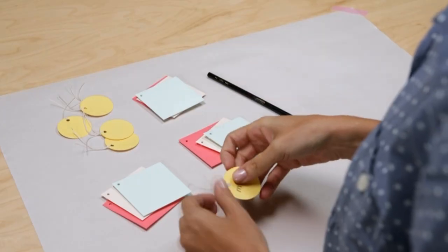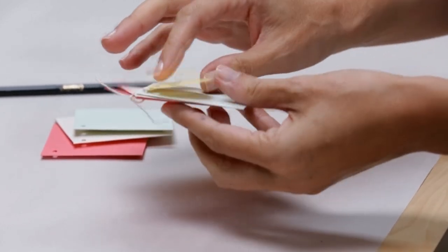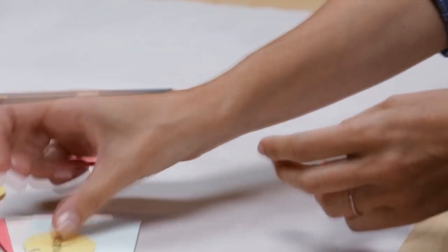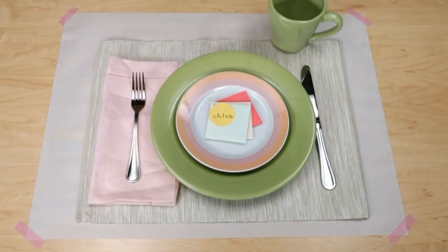Write your guests' names on the tags, then tie the tag through the corner holes of the envelopes. Place these word scramble place cards at each seat at your table, and the first guest to unscramble their words wins.